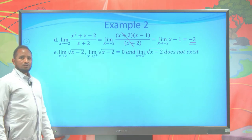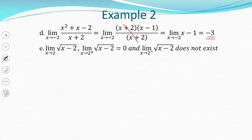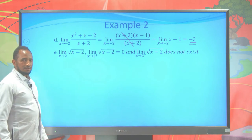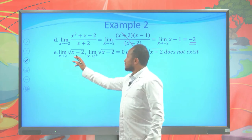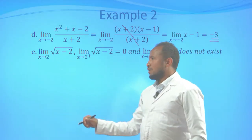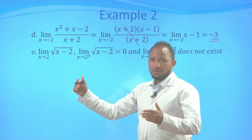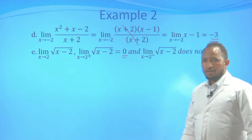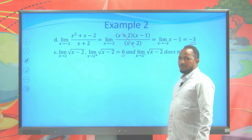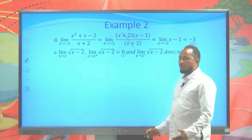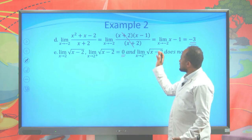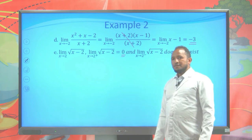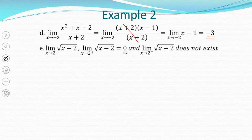Evaluate the limit of √(x − 2) when x approaches 2. Check both right-side and left-side limits. The right-side limit: taking a number slightly greater than 2, say 2.00-something, the square root of something near 0 approaches 0. So the right-side limit is 0. The left-side limit: taking 1.99, that gives the square root of a negative number, which is not a real number. Since the left-side limit does not exist, the limit of √(x − 2) when x approaches 2 does not exist.